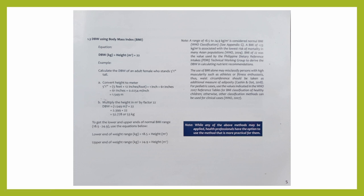In previous references, the value used in the calculation of ideal body weight for males is multiplied by 22, and for females, the value used is 20.8 or 21. But in this latest edition, the value used in the calculation is 22 for both males and females.